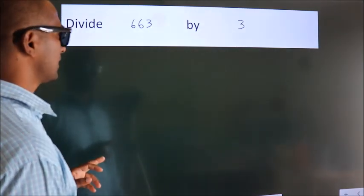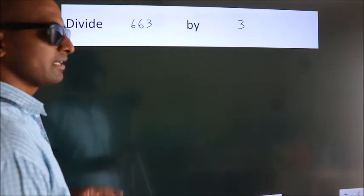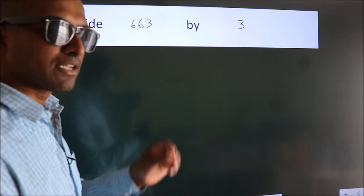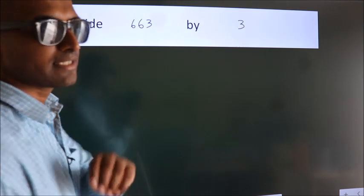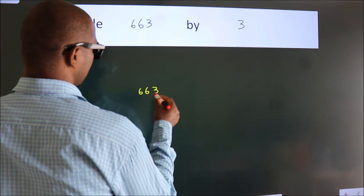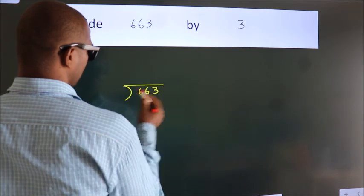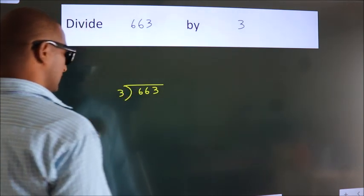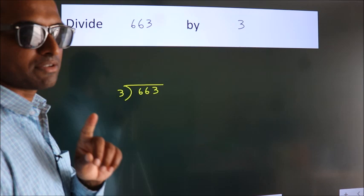Divide 663 by 3. To do this division we should frame it in this way. 663 here, 3 here. This is your step 1.